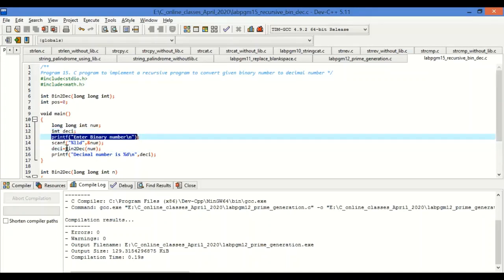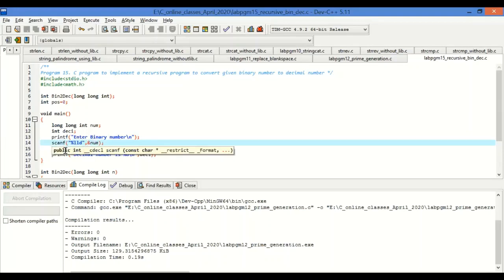Now read the value and then convert that into decimal number. Ask the user to enter the binary number. Read the numbers in the form of long long int. LLD is for long long int format specifier. Read the number. Call the function binary to decimal and pass that number.